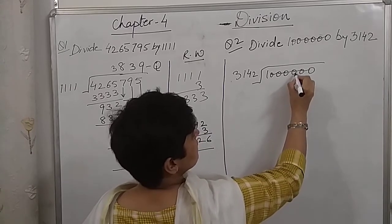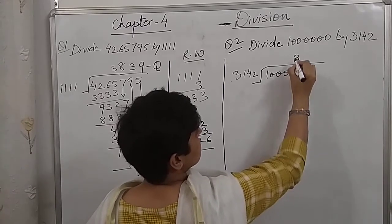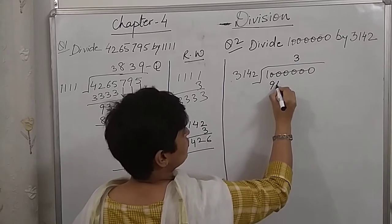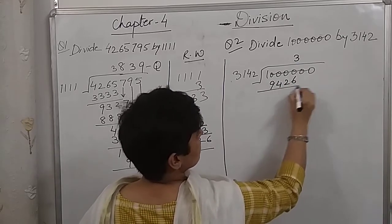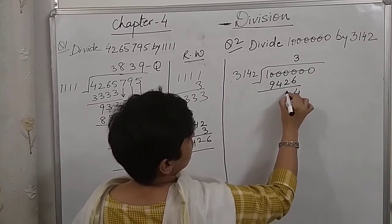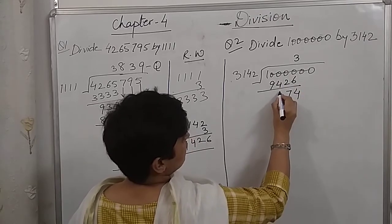So, last digit of the divisor. I am writing the quotient. 9, 4, 2, 6. 4, 9 minus 2, 7. 9 minus 4, 5.